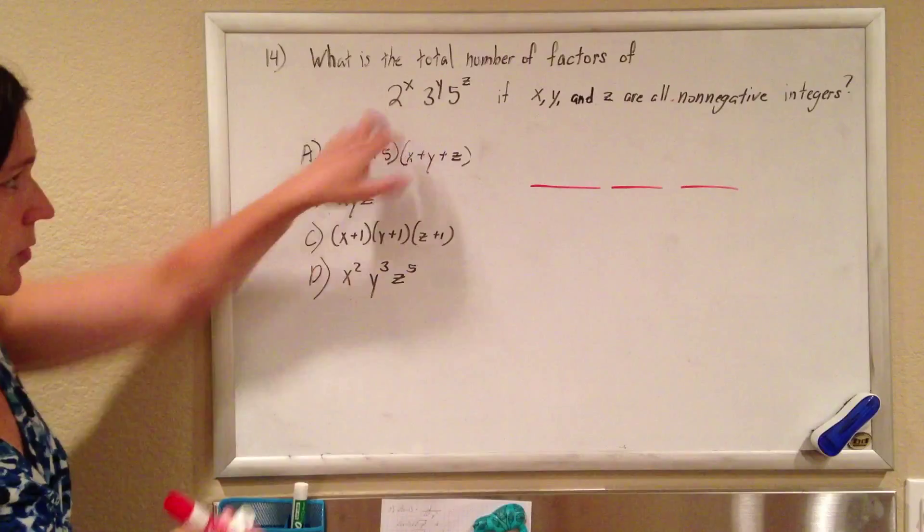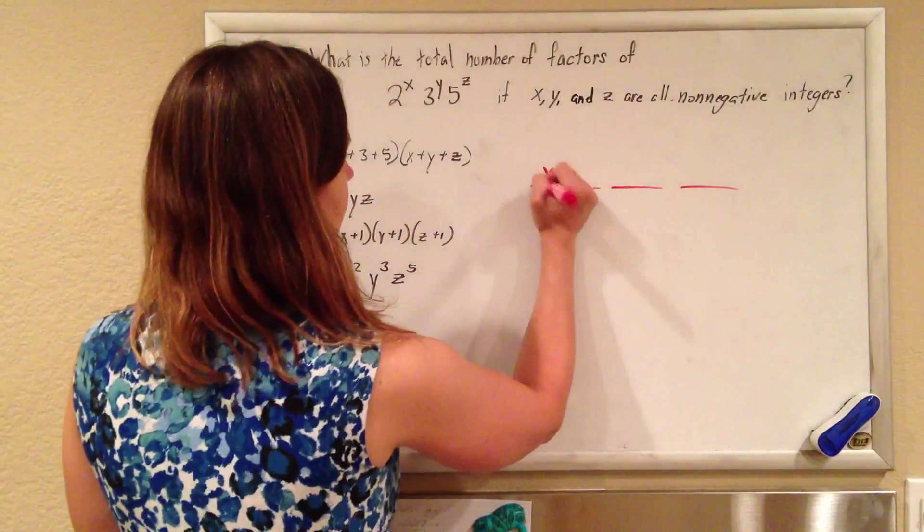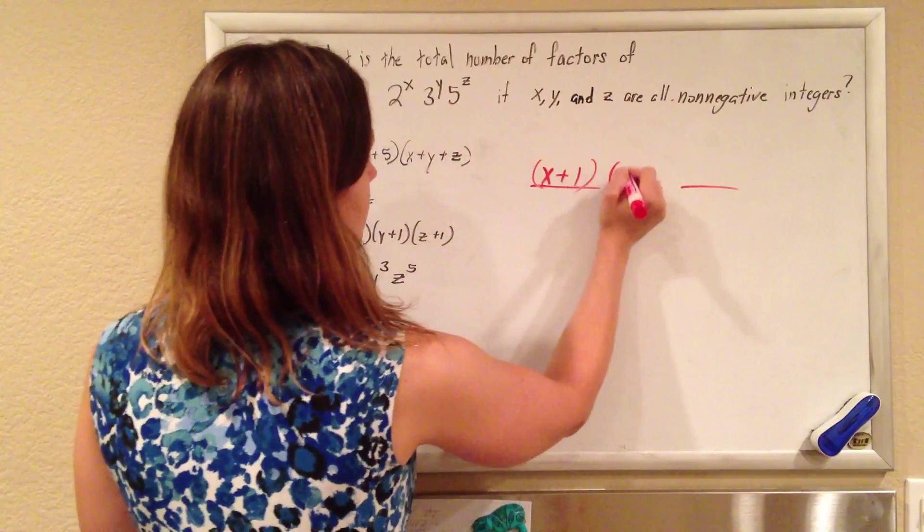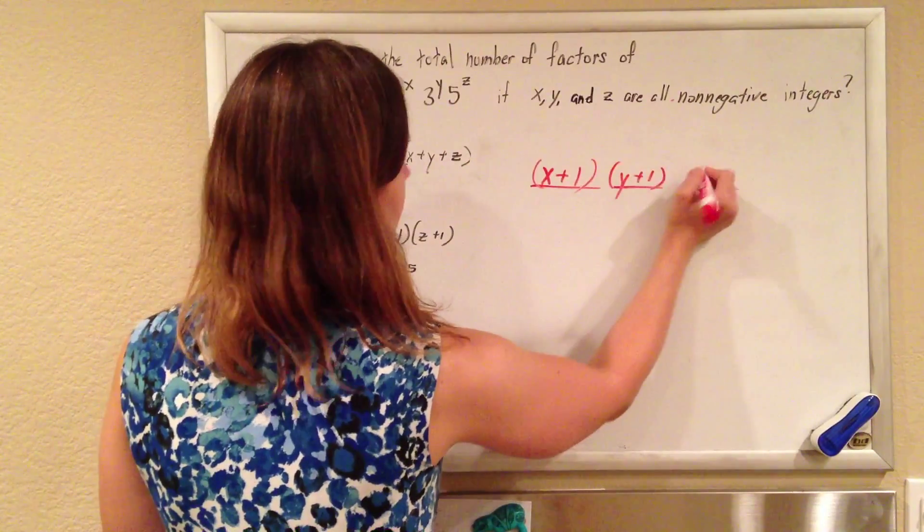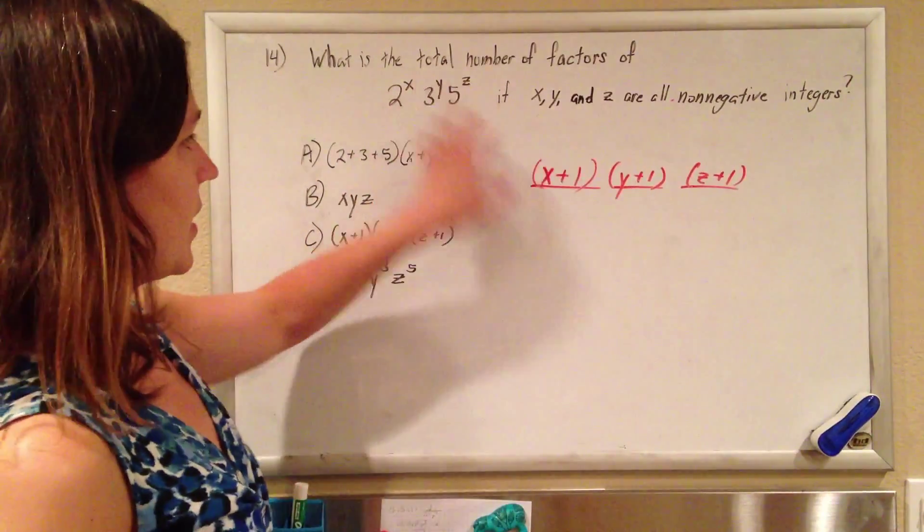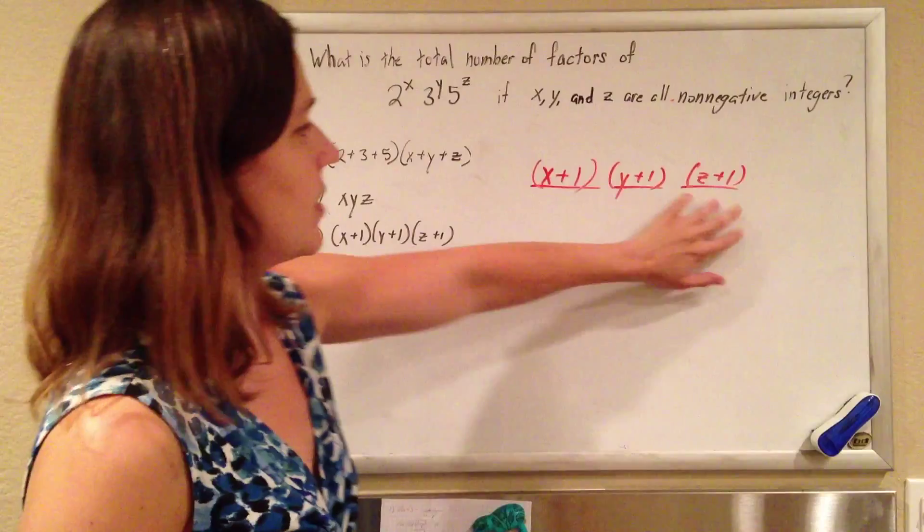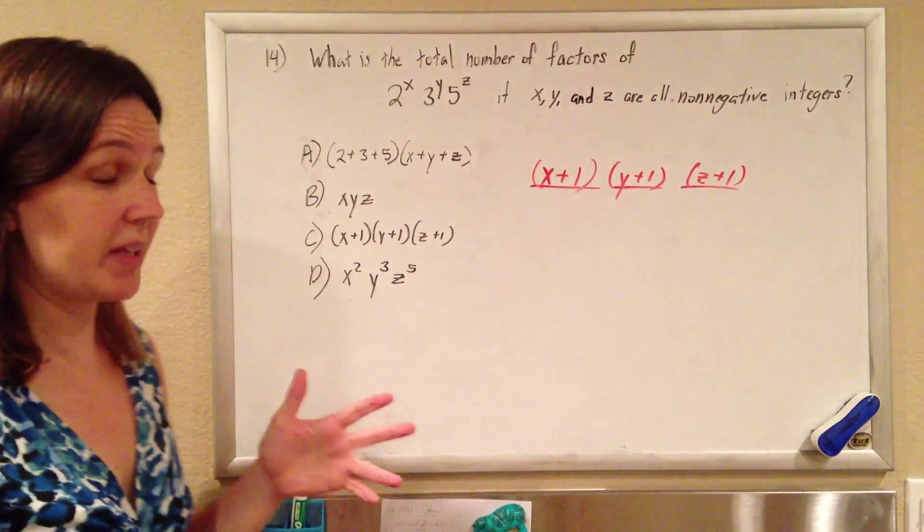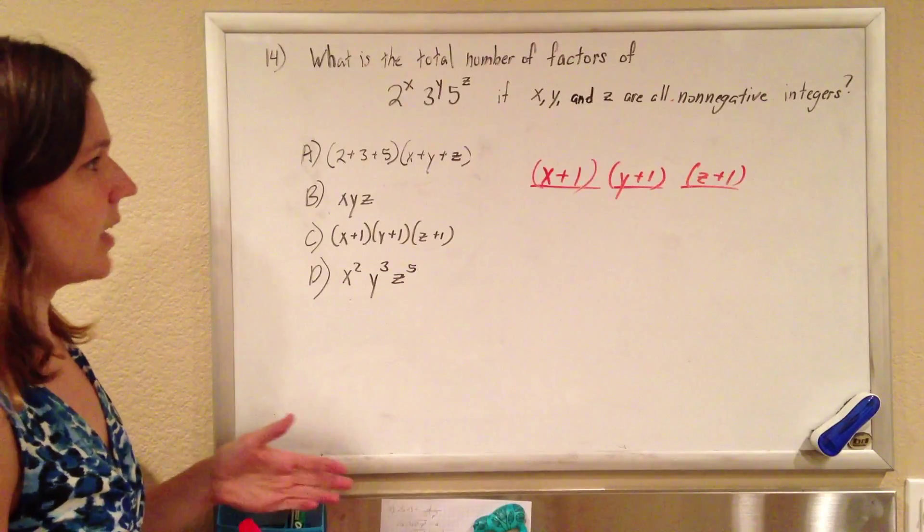So if 2 can be a factor x times or not at all, and 3 can be a factor y times or not at all, and 5 can be a factor z times or not at all, you can create your factor x plus 1 times y plus 1 times z plus 1 ways. And that's that.